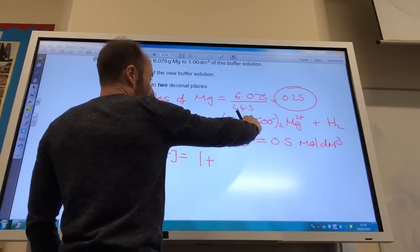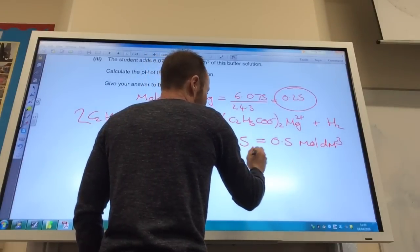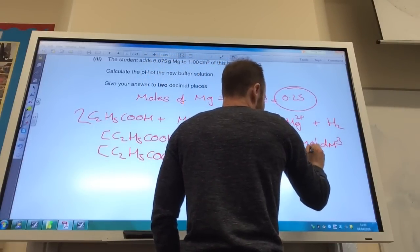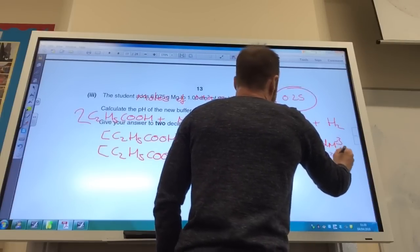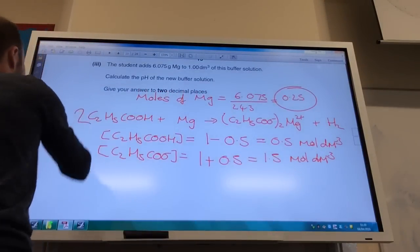For every 1 magnesium, I gained 2 more propanoate. So that's plus 0.5 moles. So my new concentration is 1.5 moles per decimeter cubed. Okay, so sorry about that. Okay.